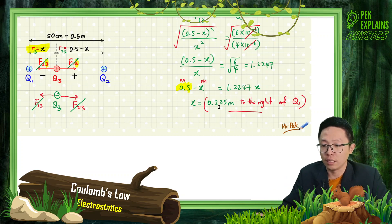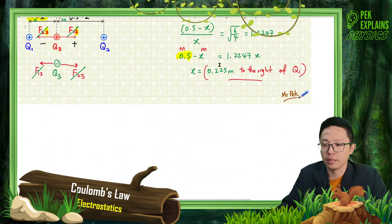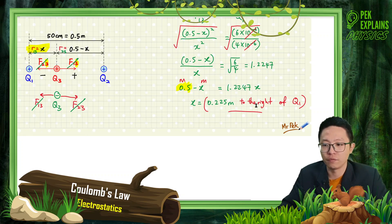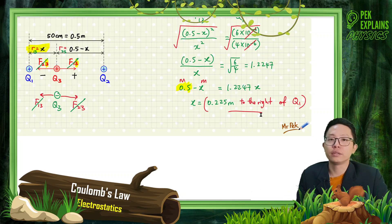That's the position where Q3 experiences total force equal to 0. Make sure you write '0.225 meters to the right of Q1' — don't just write 0.225 meters. You need to clearly state the position of Q3 relative to Q1. See you in the next question. Bye!